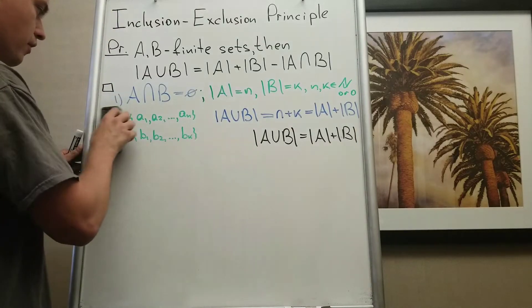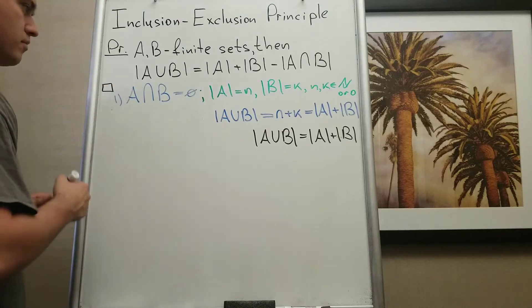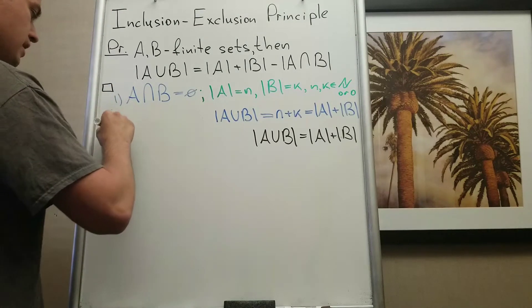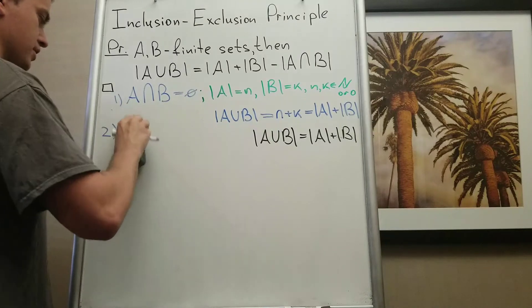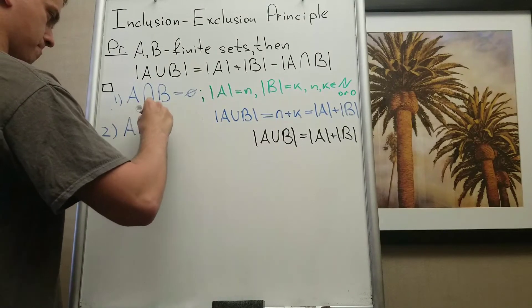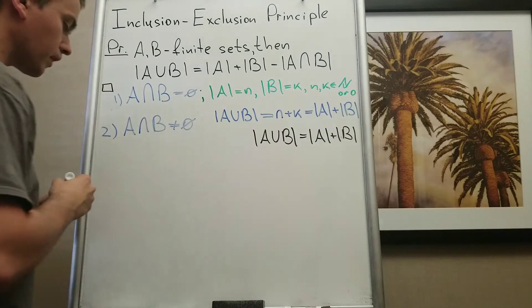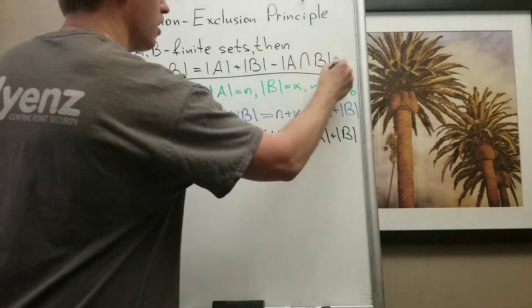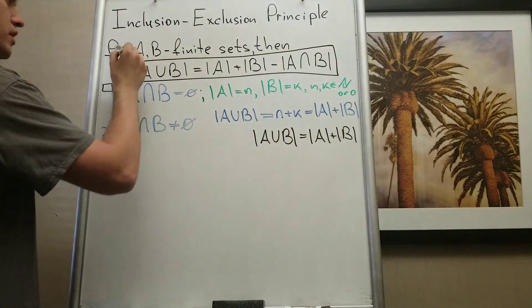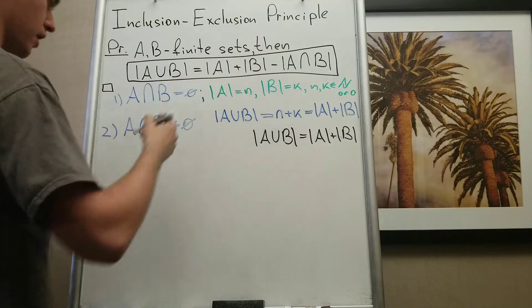We proved the first case when A intersection B is empty. Then let's assume that A intersection B is non-empty. And when A intersection B is non-empty, I want to prove this formula. I want to show that cardinality of A union B is cardinality of A plus B minus the intersection.